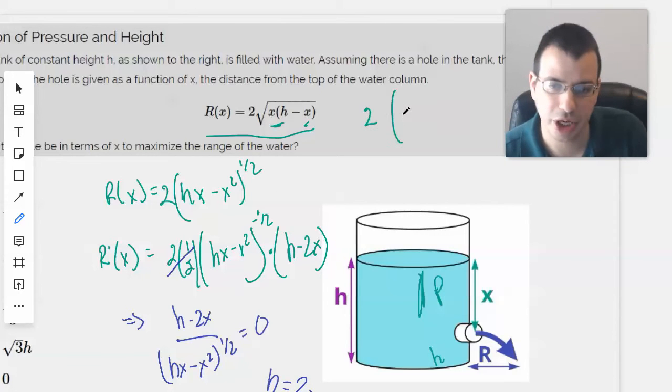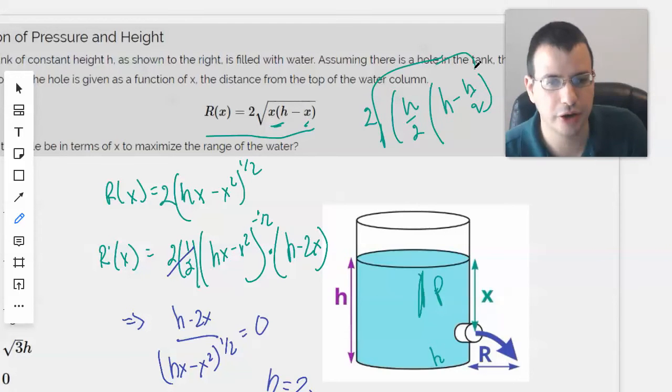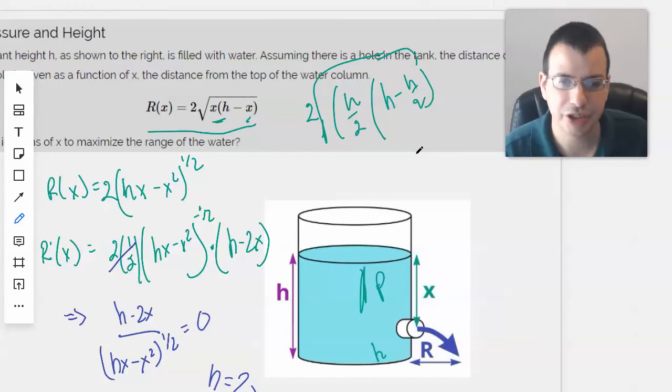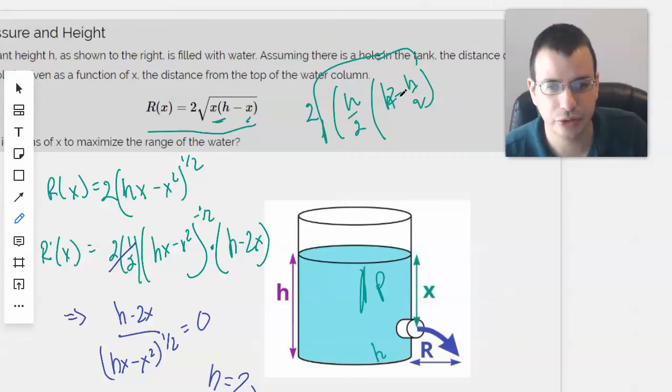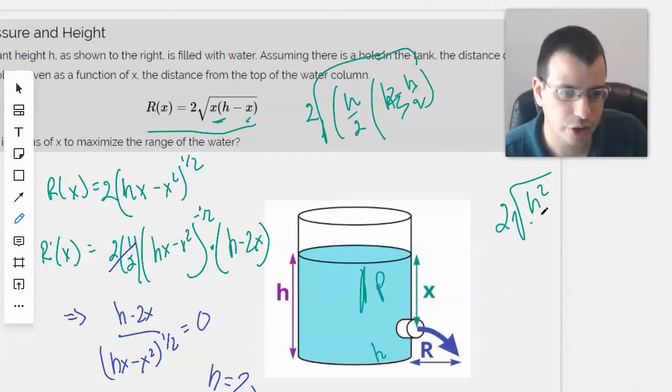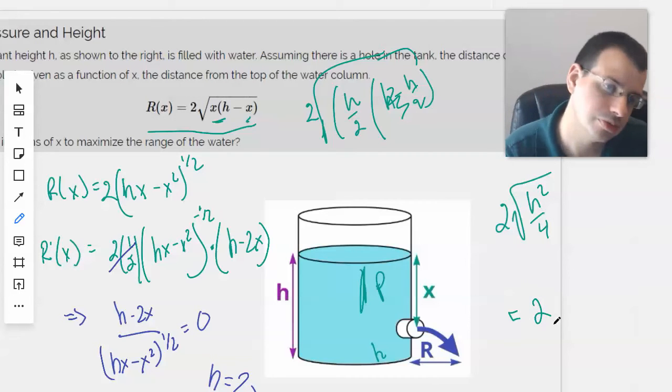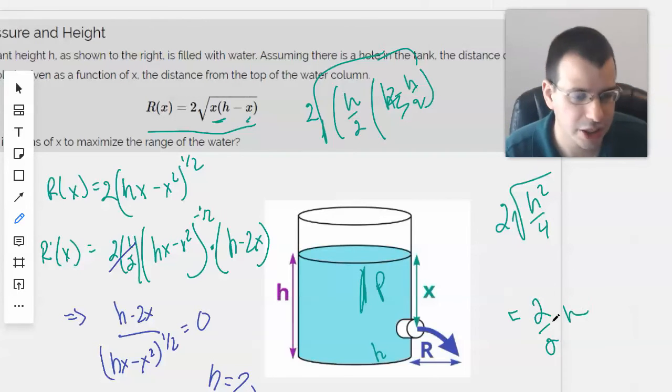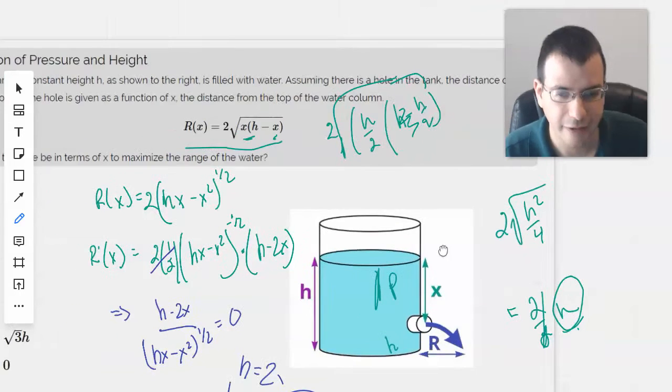It makes sense that our maximum distance would be h over 2. So we have 2 times h over 2 times h minus h over 2 square rooted, which is... This becomes h over 2. We have h squared over 4, 2 times square root of h squared over 4, which equals 2 over 2 times h. So we have a maximum distance of h.